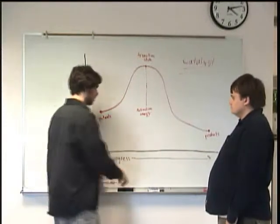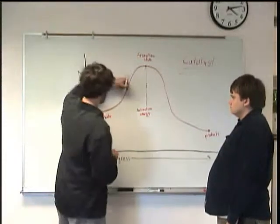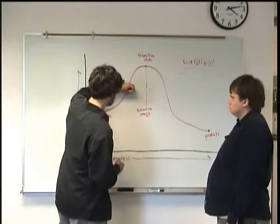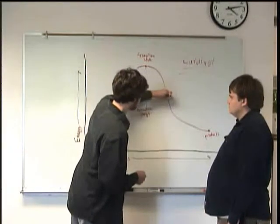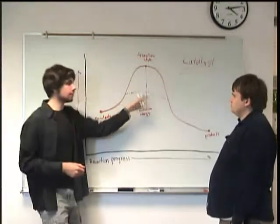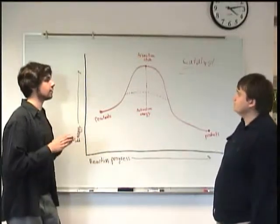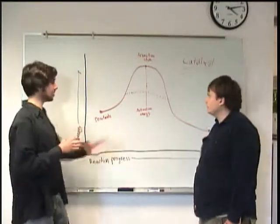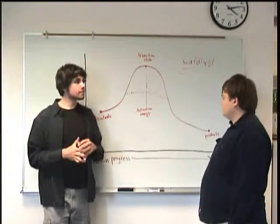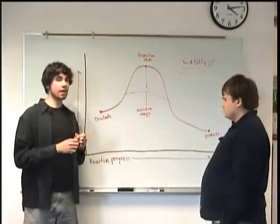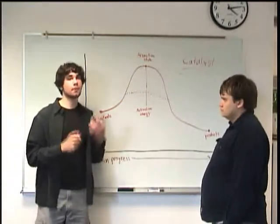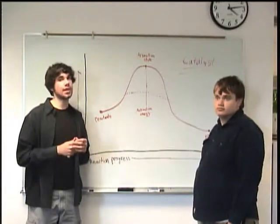So a catalyst is basically just something that lowers the activation energy, makes the hump smaller, so that way the reaction will proceed faster. And we can kind of represent that here on our diagram by saying, well, why don't we just say that the transition state gets lowered to say about right there. And it's basically like tunneling through the hill. Pretty much, exactly. And that's what a catalyst would do. I see that.